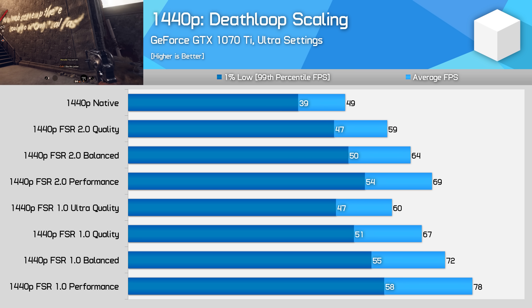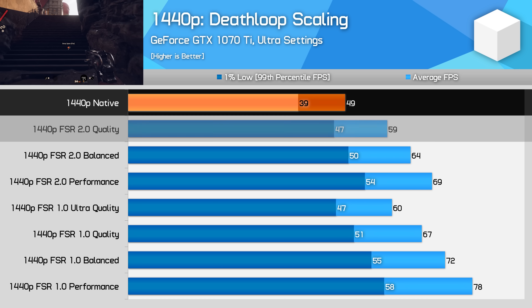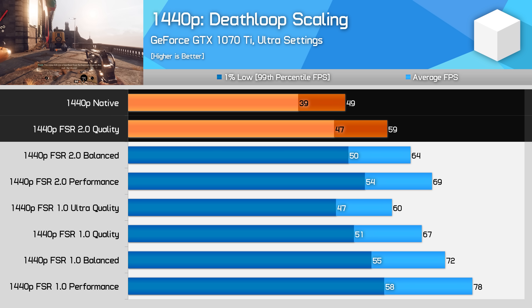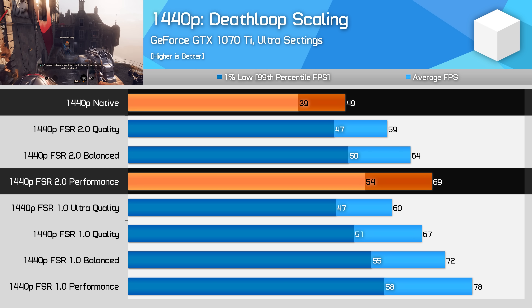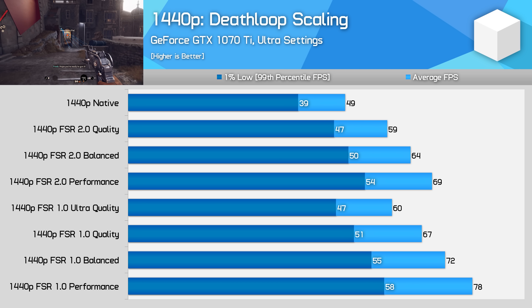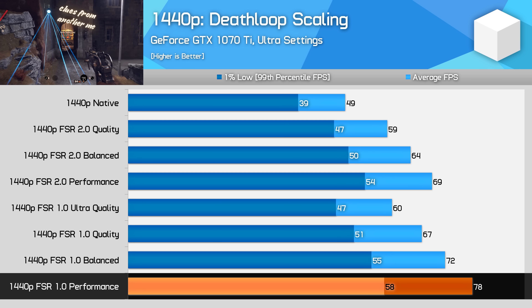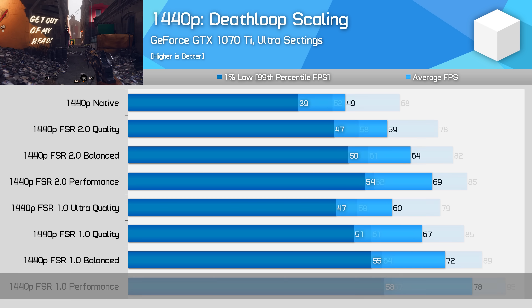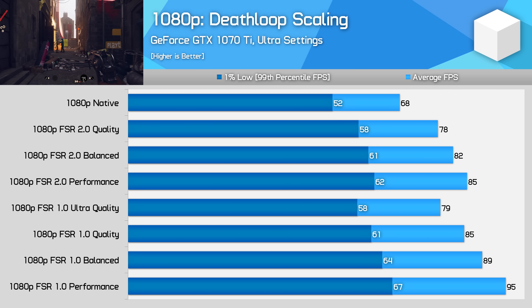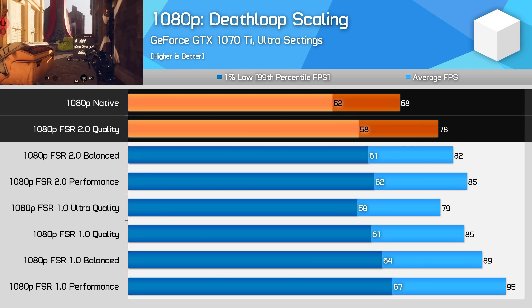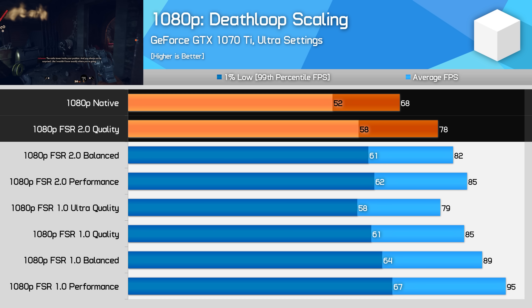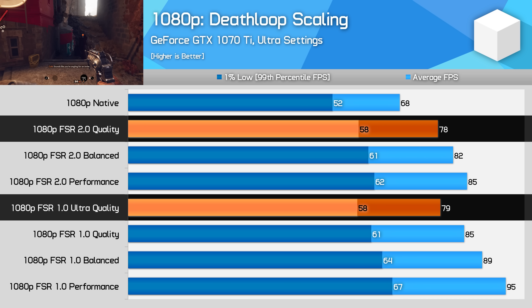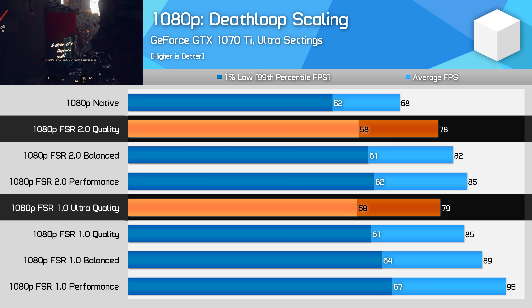On NVIDIA's Pascal architecture we see a similar situation to Vega 64. Using ultra settings at 1440p, the GTX 1070 Ti achieved 20% better performance going from native to FSR 2.0 quality, and 41% using FSR 2.0 performance mode. FSR 1.0 does perform quite a bit better on this architecture, especially at lower render resolutions, but I'd still prefer FSR 2.0 due to its higher image quality. At 1080p, more modest gains of 15% for the quality mode. FSR 1.0 wasn't exactly miles better at its ultra quality setting, so I'm still pleased FSR 2.0 is usable here and a better option than AMD's older FSR version.